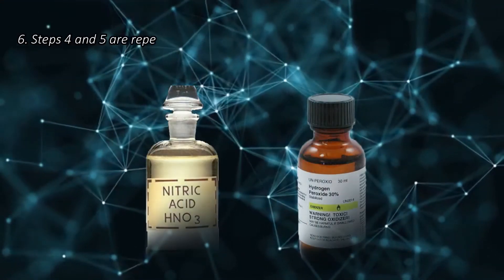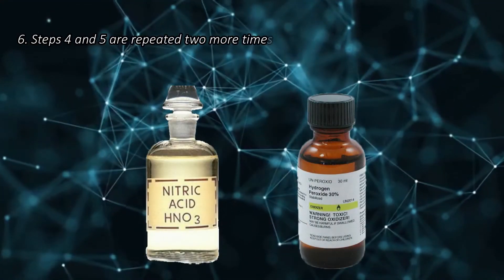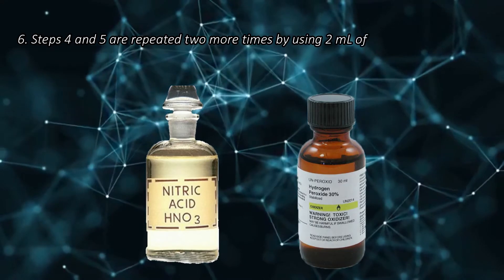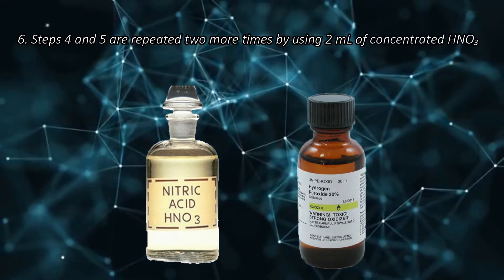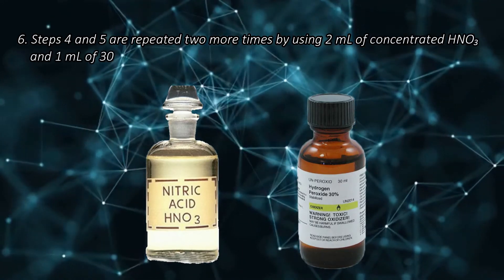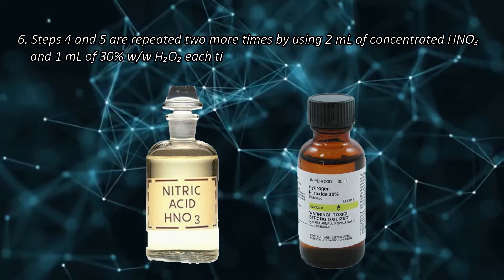Step 6. Steps 4 and 5 are repeated two more times by using 2 ml of concentrated nitric acid and 1 ml of 30% weight-over-weight hydrogen peroxide each time.